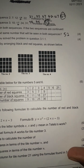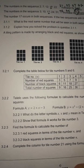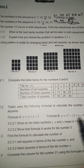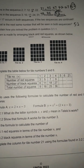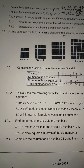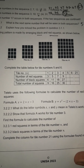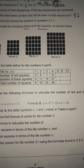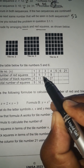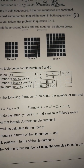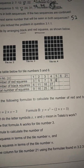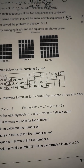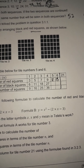Moving to question 3.2: a tiling pattern is made up by arranging black and red squares. We need to complete the table for tile numbers 5 and 6. The red squares sequence is 3, 5, 7, 9 — the difference is 2, so we keep adding 2: 9 + 2 = 11 and 11 + 2 = 13.